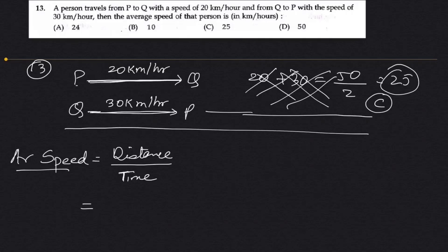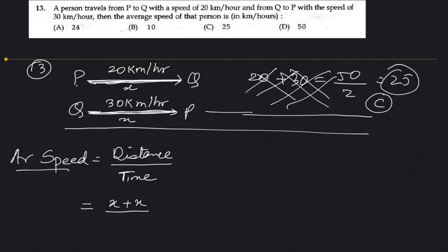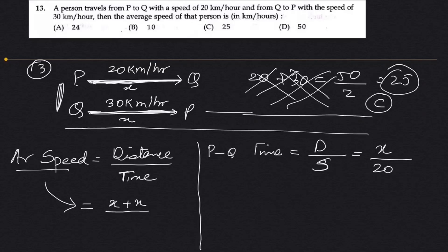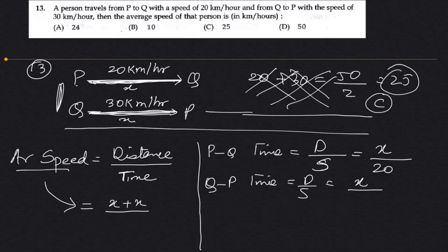Since it is the same distance, let's say P to Q is X. Then total distance is X plus X, which is 2X. Time from P to Q is distance by speed, which is X by 20. From Q to P, same distance by speed 30, so time is X by 30.